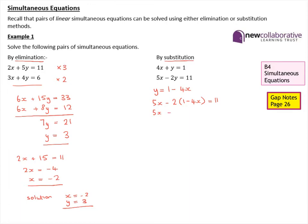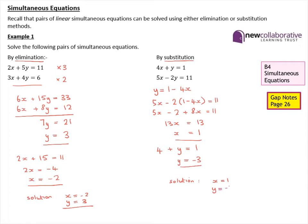So 5x take away 2, add 8x equals 11. Simplifying gives us 13x equals 13, so x is equal to 1. We can then substitute our value of x into the first equation: 4 times x plus y equals 1, and that tells us that y is equal to negative 3. So the solution to this pair of linear simultaneous equations is x equals 1 and y equals negative 3.